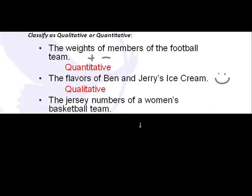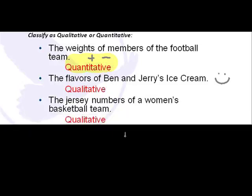The jersey numbers of the women's basketball team. Yes, they're numbers, but let me highlight that when we're talking about quantitative, we should be able to add and subtract these. That doesn't really make a lot of sense here. So this is qualitative.